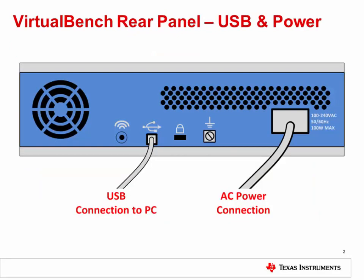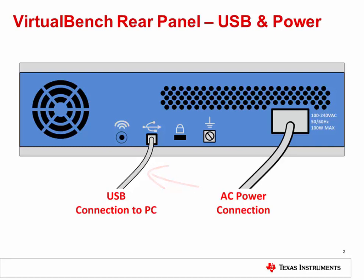This slide shows the Virtual Bench rear panel. Connect the included AC power cord to the back of the Virtual Bench, and plug the other end of the cable into an available AC power outlet. Connect the included USB cord to its port on the back of the Virtual Bench, and plug the other end of the cable into an available USB port on your computer.